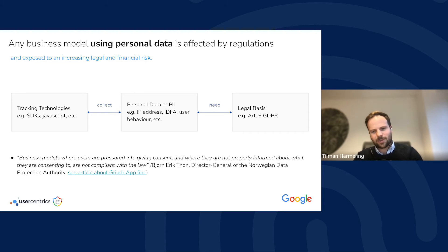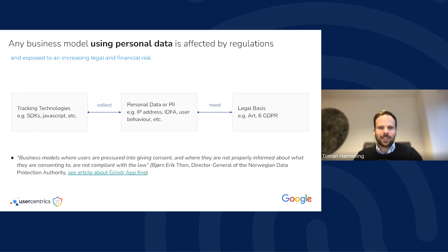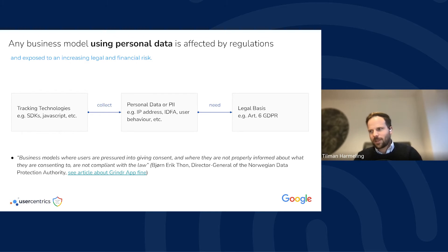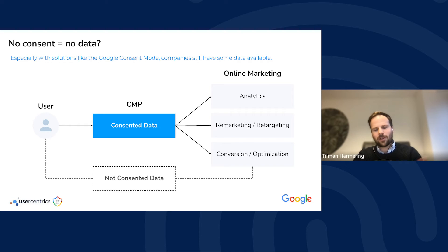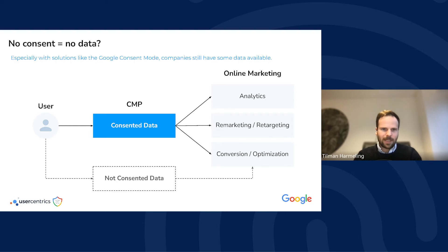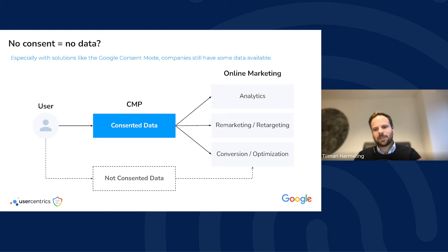Basically, you have a tracking technology — an SDK in an application or JavaScript on your website — and whenever this collects personal identifiable information like an IP address, you need consent to track that information. For a long time, no consent meant no data: no analytics, no remarketing, no retargeting, no conversion tracking. It was tough to continue marketing the way it worked before 2018 and the GDPR.